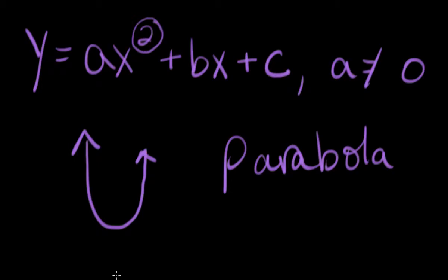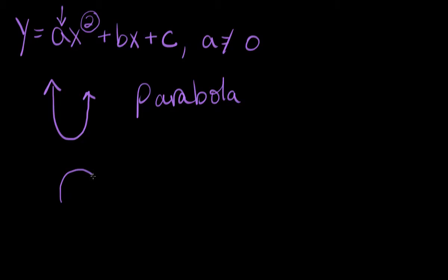Now, the way that you determine the direction of your parabola is by looking at the a value. If a is positive, your parabola will open upward. But if a is negative, your parabola will open downward. Make sure you remember that. If a is positive, your parabola will open up. If a is negative, your parabola will open down.